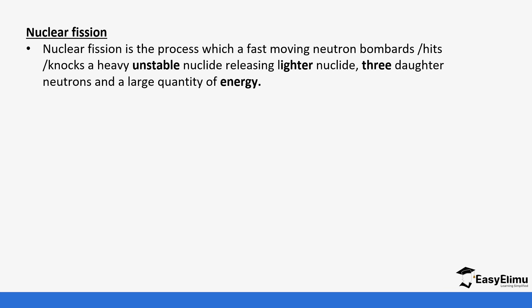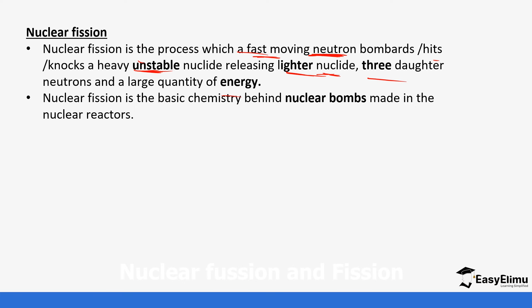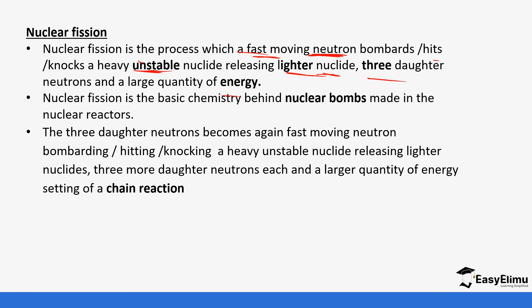So for nuclear fission is a process with a fast-moving neutron. There's a neutron that is moving very fast. It hits and bombards heavy and stable nuclide and it releases little nuclides and three daughter neutrons with a large amount of energy. So nuclear fission is the basic chemistry behind nuclear bombs made in the nuclear factories. So the three daughter neutrons become again fast moving neutrons bombarding more other heavy and stable nuclides releasing even smaller nuclides and three more daughter nuclides. And then it becomes like a chain reaction. And this chain reaction continues to produce a lot of energy that is now used in powering those nuclear stations.